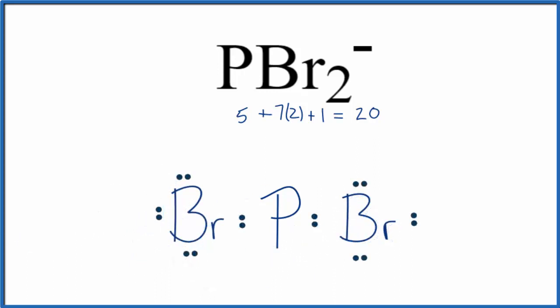Next we'll complete the octet on the phosphorus. At this point we've used 20 valence electrons and each atom has an octet.